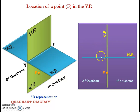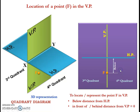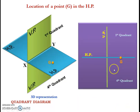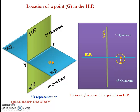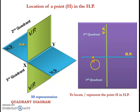Now let us see another point F which is located in the horizontal plane. In this case we need only the in-front-of distance from the vertical plane. Now let us consider another point G which is also located in the horizontal plane. In this case, the above or below distance from the horizontal plane becomes zero. Similarly, for point H located in the horizontal plane, the above or below distance from horizontal plane becomes zero, but we need only the behind distance from the vertical plane.